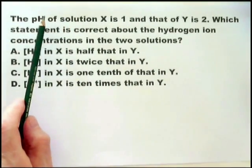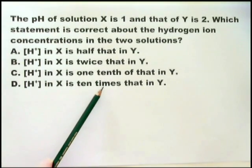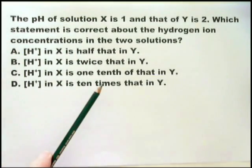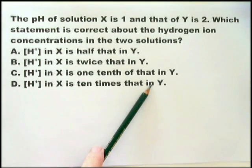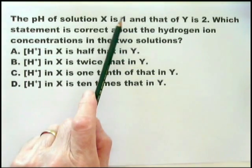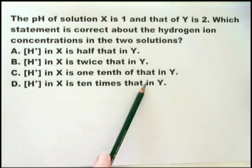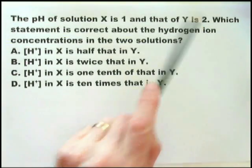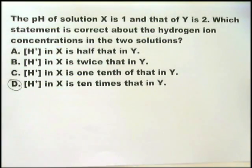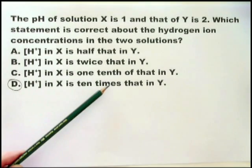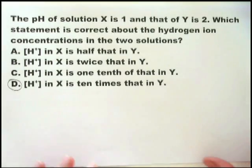The important thing to remember about pH of solutions is that hydrogen ion concentrations change in tenths or multiply by 10. So you can ignore A and B. You have to remember that the smaller the number, the greater the concentration of hydrogen ion. The hydrogen ion in X is ten times greater than the hydrogen ion in Y.